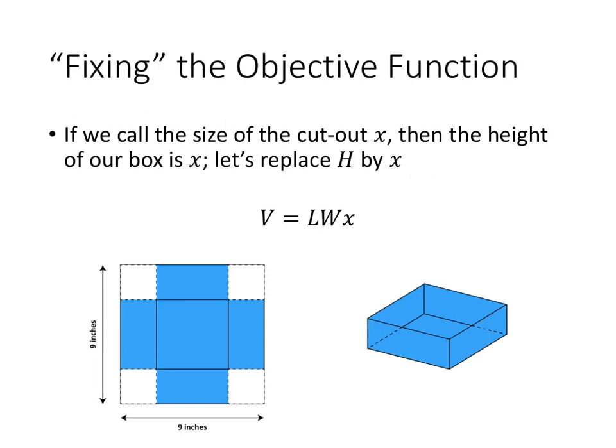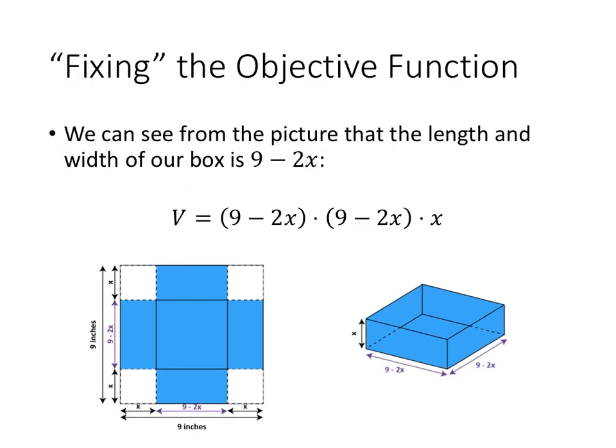So since we know our variable is going to be the size of the cutout, and we also saw earlier that the size of that cutout is going to turn into the height of our box, let's simply call that x instead of h. And just like before, since we're cutting two x's off of each side, and the sides start at 9, we're going to take that 9 and subtract away two x's. So the length and the width of our box are 9 minus 2x.